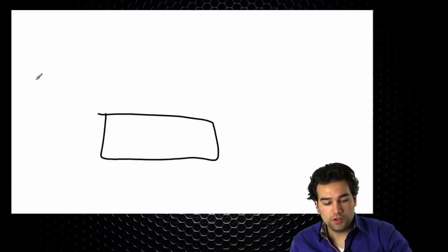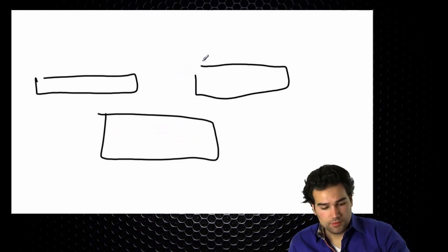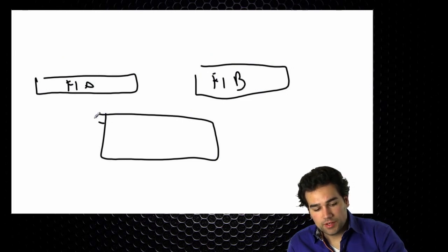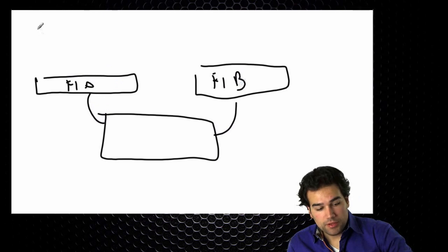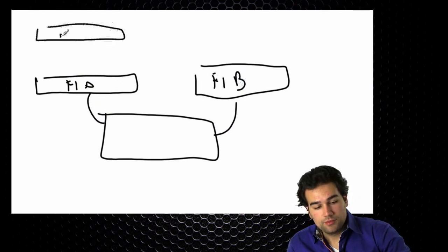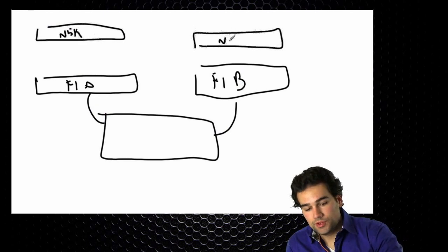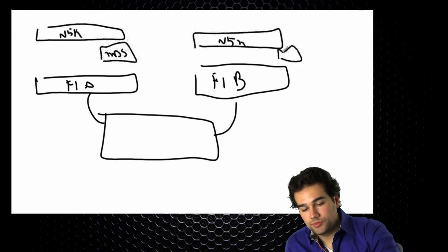We have a UCS system with one chassis and two fabric interconnects — an FIA and an FIB — connected via two fabric extenders. Up here we have Nexus 5K switches for the Ethernet part and MDS switches for the storage part, specifically the fiber channel part.